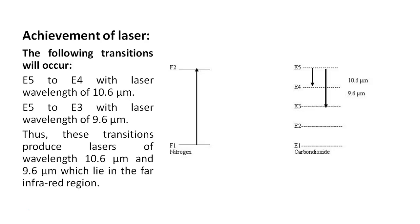Achievement of laser: The following transitions occur. First, E5 to E4 with laser wavelength of 10.6 micrometers. Second, E5 to E3 with laser wavelength of 9.6 micrometers.